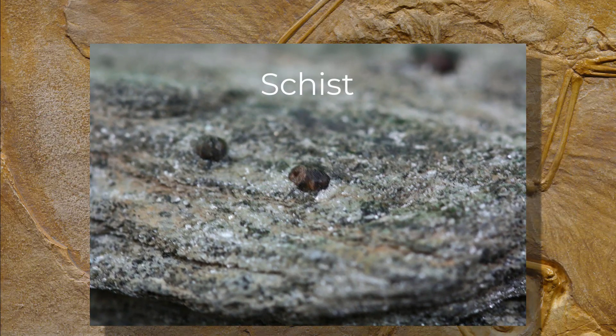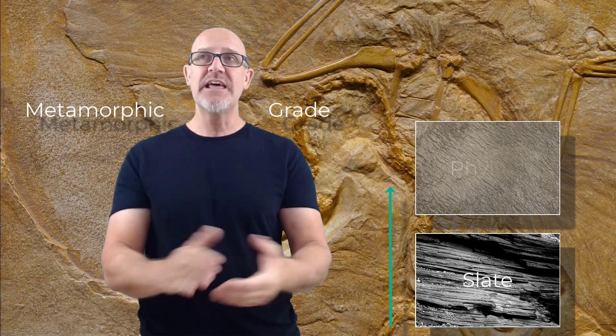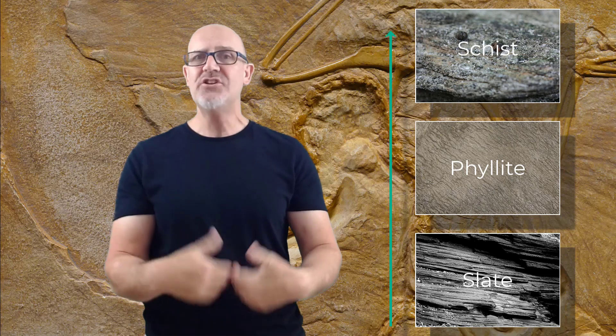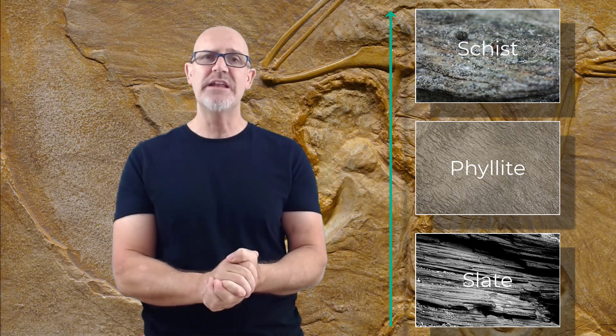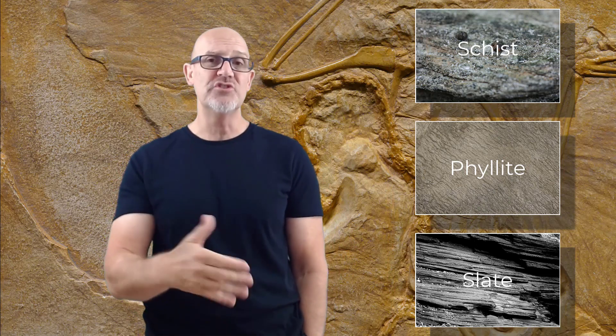I found this beautiful example just lying around in a creek bed, which means you can too. As metamorphic rocks continue to change with increasing temperatures and pressures, we say that its metamorphic grade increases. Slate would be considered a very low metamorphic grade, phyllite would be low to medium, and schist would be considered a higher grade metamorphic rock, because the minerals in the schist would be very different from the parent rock from which they originally came.